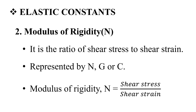It is the ratio of shear stress to shear strain — this is the modulus of rigidity. It is represented by capital letters N, G, or C. Modulus of rigidity N is equal to shear stress divided by shear strain.